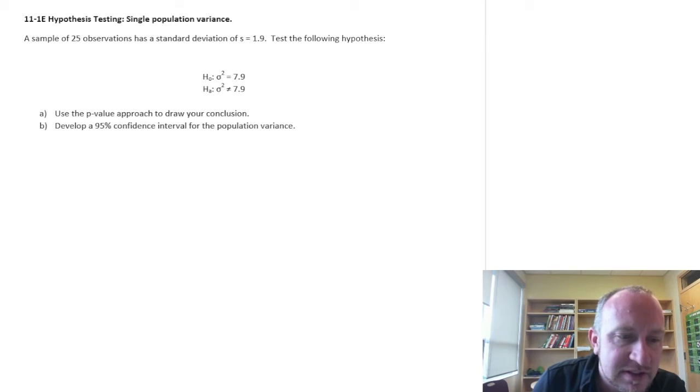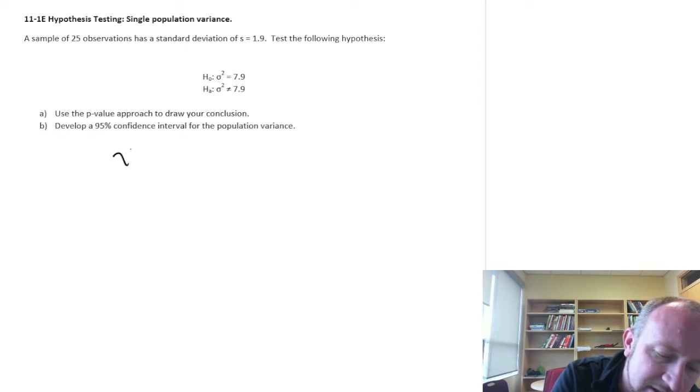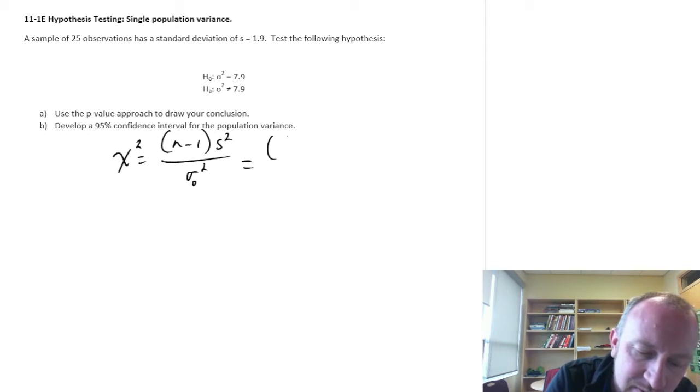So the first step that we're going to do, we've already got our hypothesis test here. We need our test statistic. So this is just n minus 1 s squared over the hypothesized value. And we have 25 observations. So 25 minus 1. That sample standard deviation was 1.9 squared.